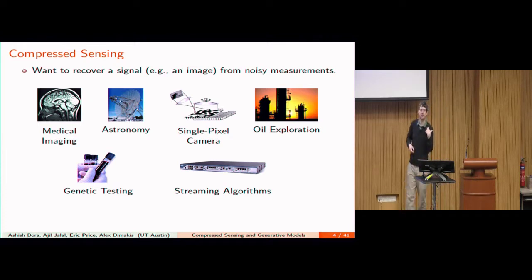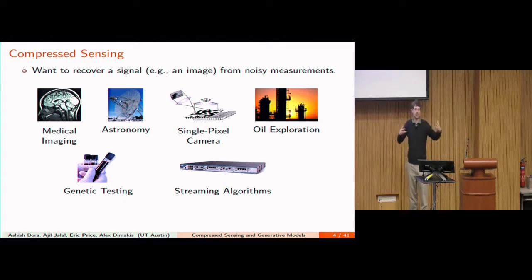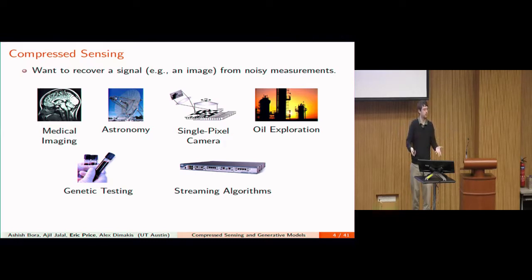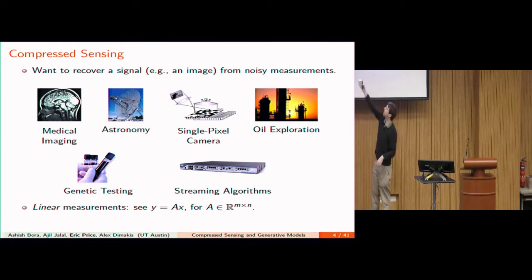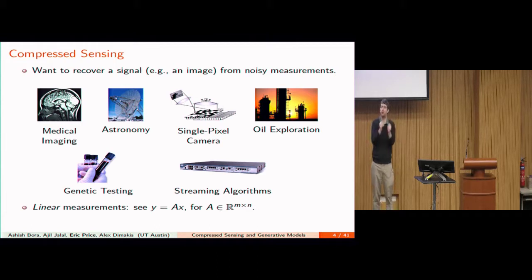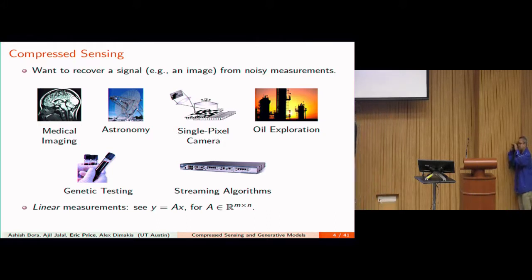In streaming algorithms — which is how I got into this field — you have a stream of updates like a long list of URLs and you want to know which URLs appear really frequently. In all these cases, you have some underlying signal you're trying to learn, and the process that lets you access the signal is a linear process. What you observe is a linear function of the signal. In MRIs, for instance, the measurement is a sample from the Fourier transform of the image, and you choose which sample based on how you apply the magnets.